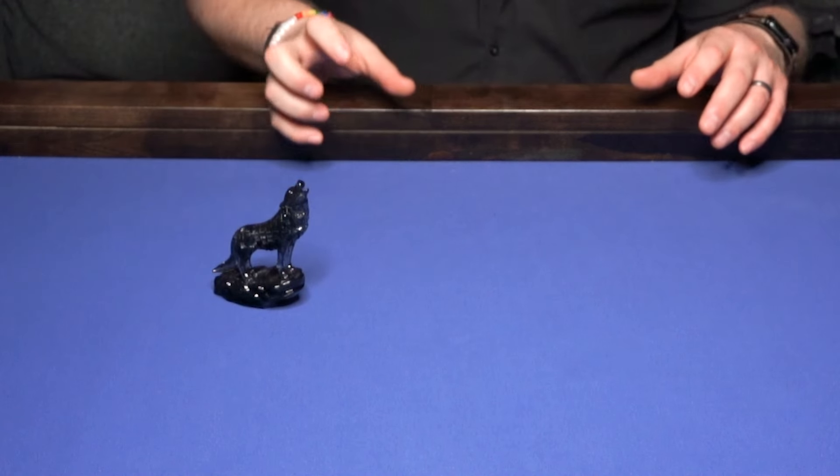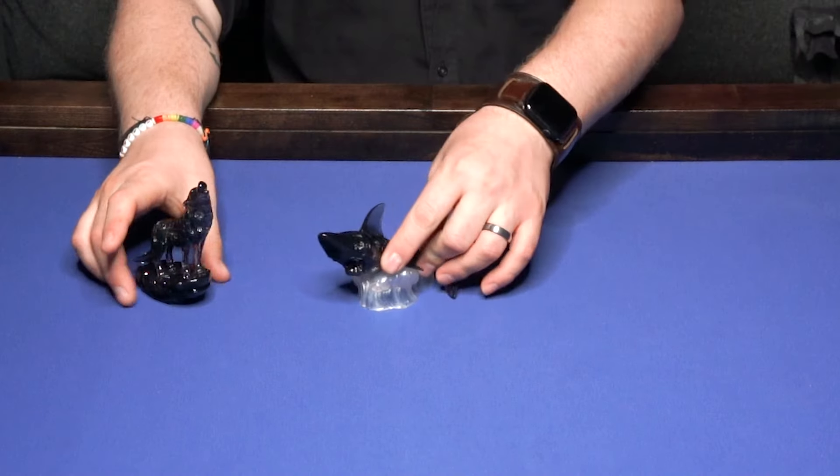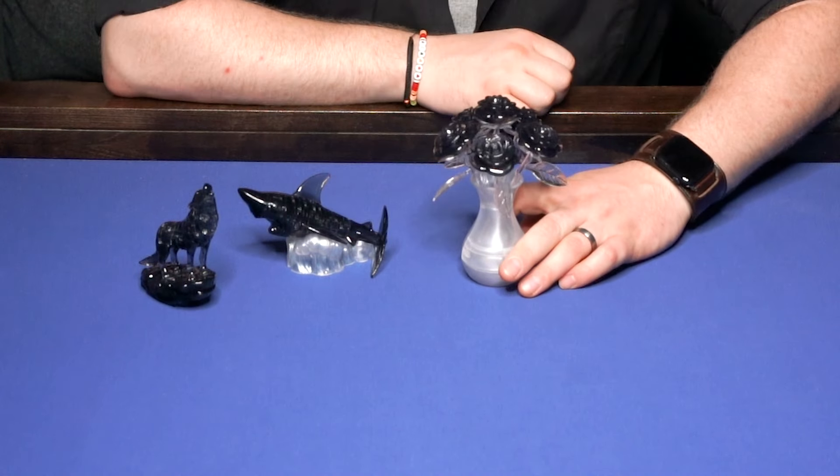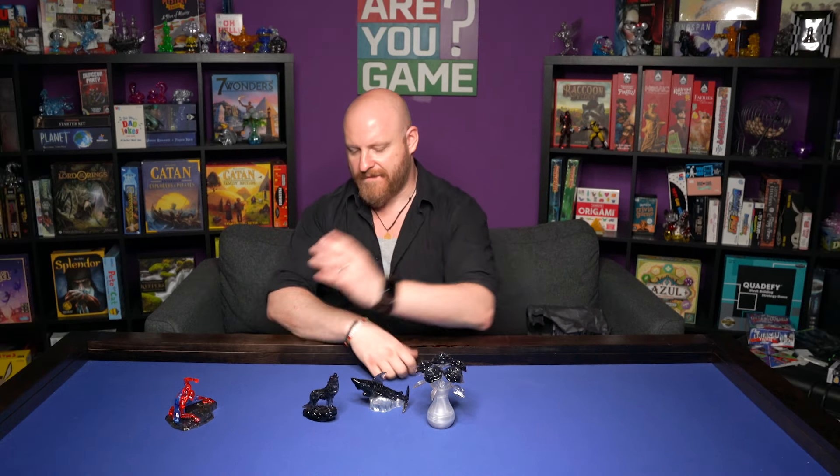Before we get into that, pre-orders are open now for our spooky collection. We've got the black wolf, howling against a full moon, the vicious black shark jumping out of the water, and the macabre black roses. Head on over to RUGame.com now to pre-order these—they'll be here in time for spooky season. But forget all that today, because right now we're going to build Spider-Man.